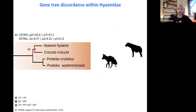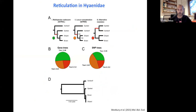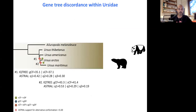One node that was perhaps more surprising is the discovery of gene tree discordance within Hyenidae, where the aardwolf appears as the sister group of the other hyenas. We find evidence for discordance — even though the majority topology seems to be this one, there are also alternative topologies appearing in the gene trees. This was confirmed by a parallel study by Westbury et al., who also sequenced an aardwolf genome and confirmed ancient gene flow between the aardwolf lineage and the ancestral lineage leading to the other hyenas.